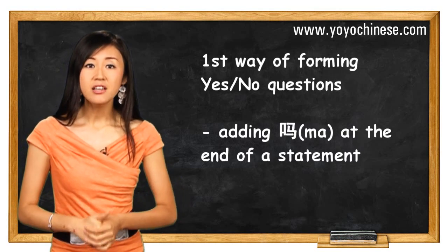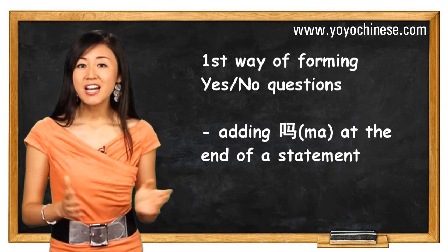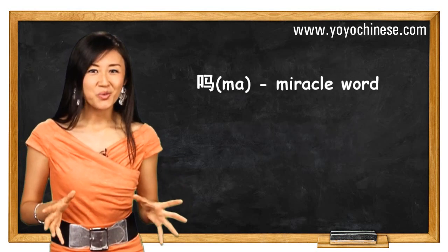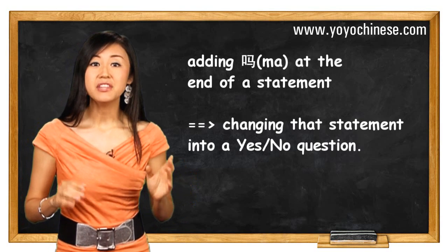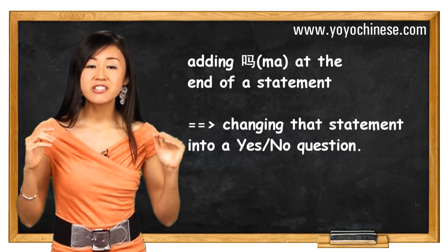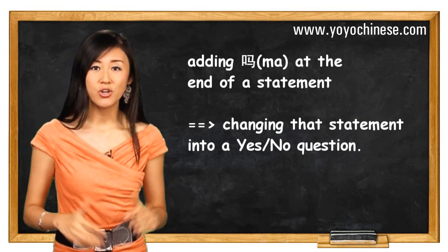First, adding ma at the end of a statement. In Chinese, I call ma a miracle word because when you add ma at the end of a statement, you instantly change that statement into a yes or no question.